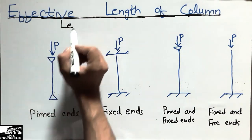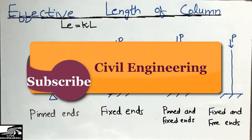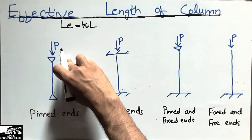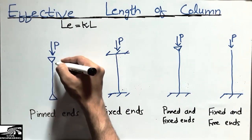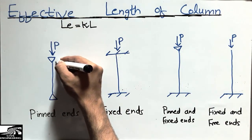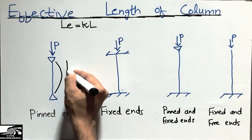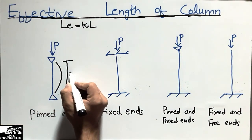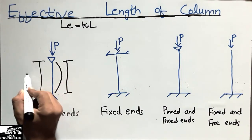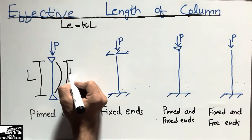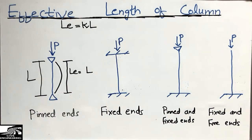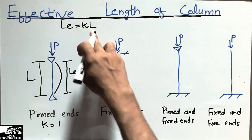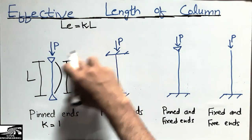The effective length of the column is represented by LE, and LE is equal to KL. For the first case, when both ends of the column are pin ends, the column buckles and the distance between the two inflection points equals the original length L. So the effective length LE equals L, meaning K equals 1.